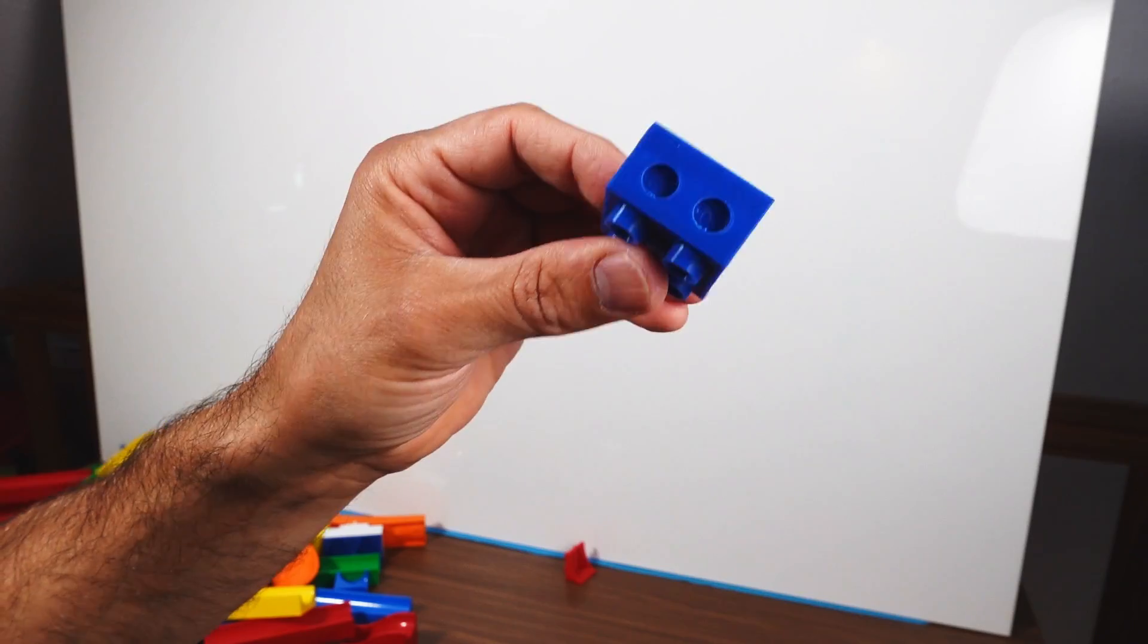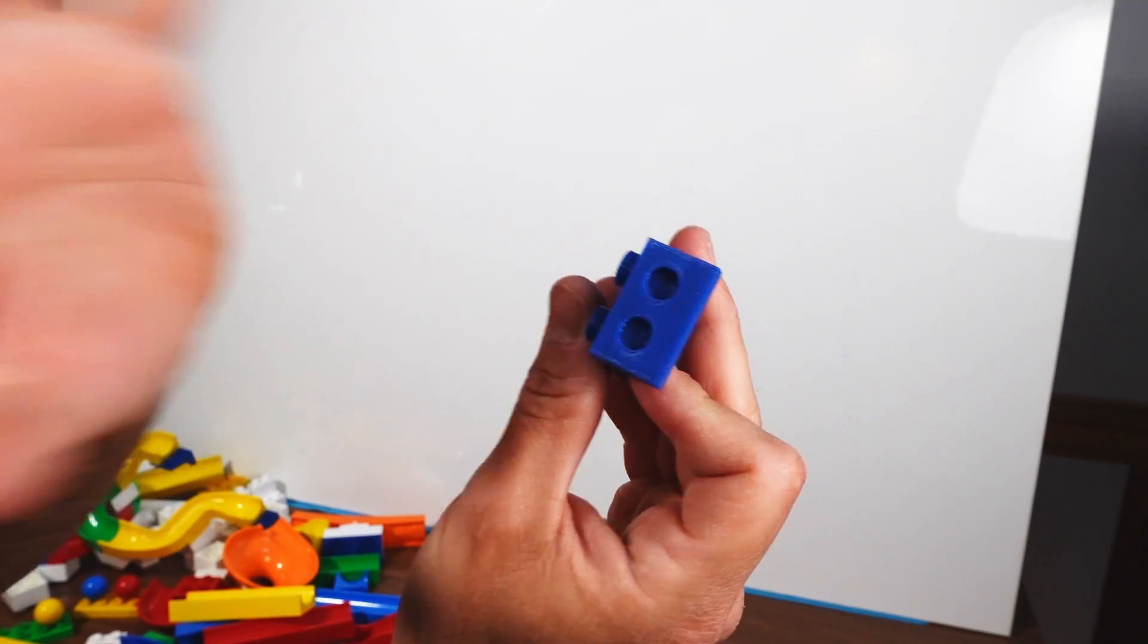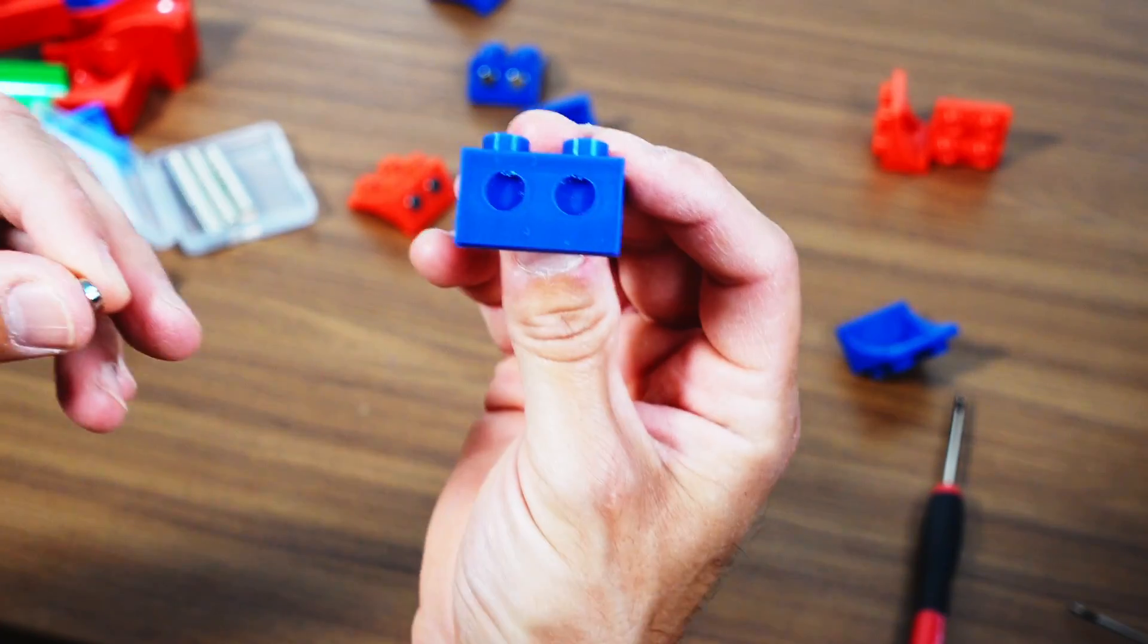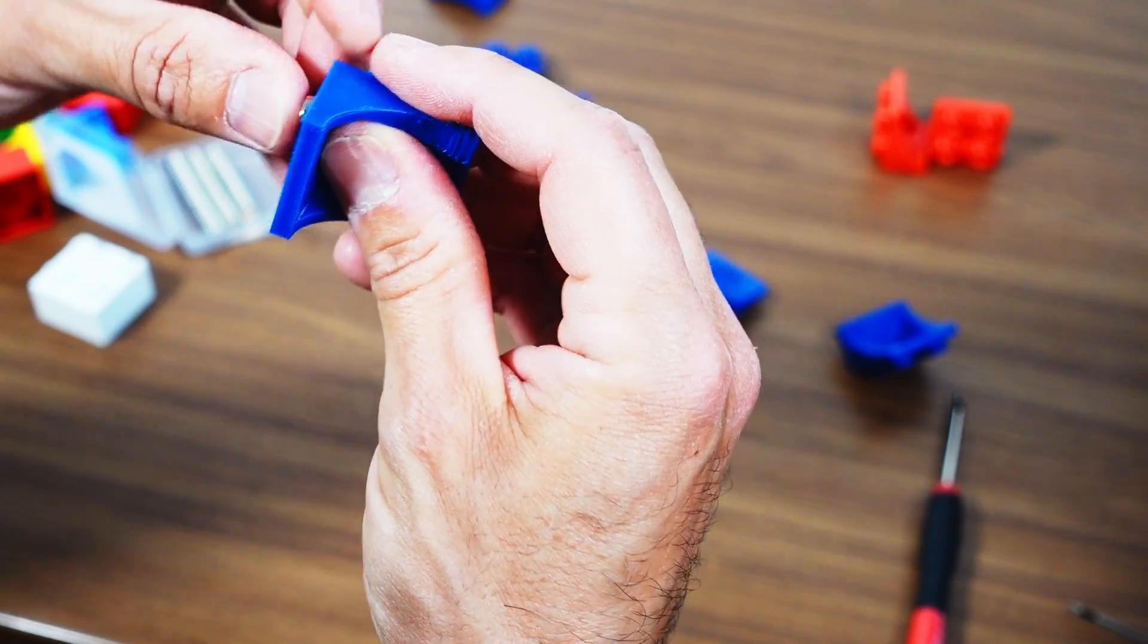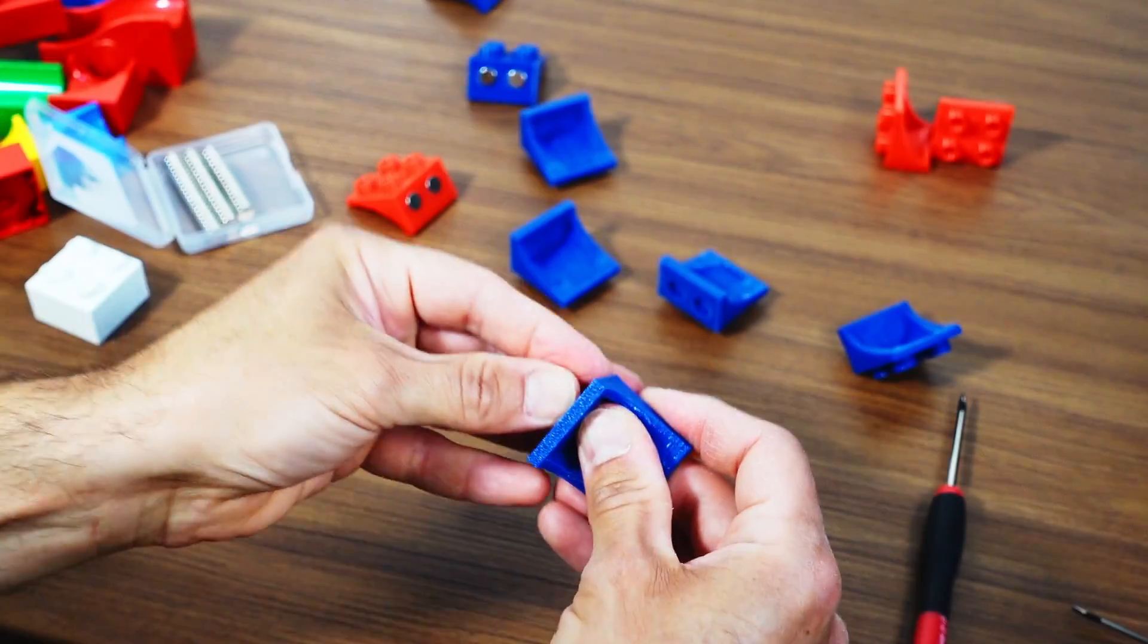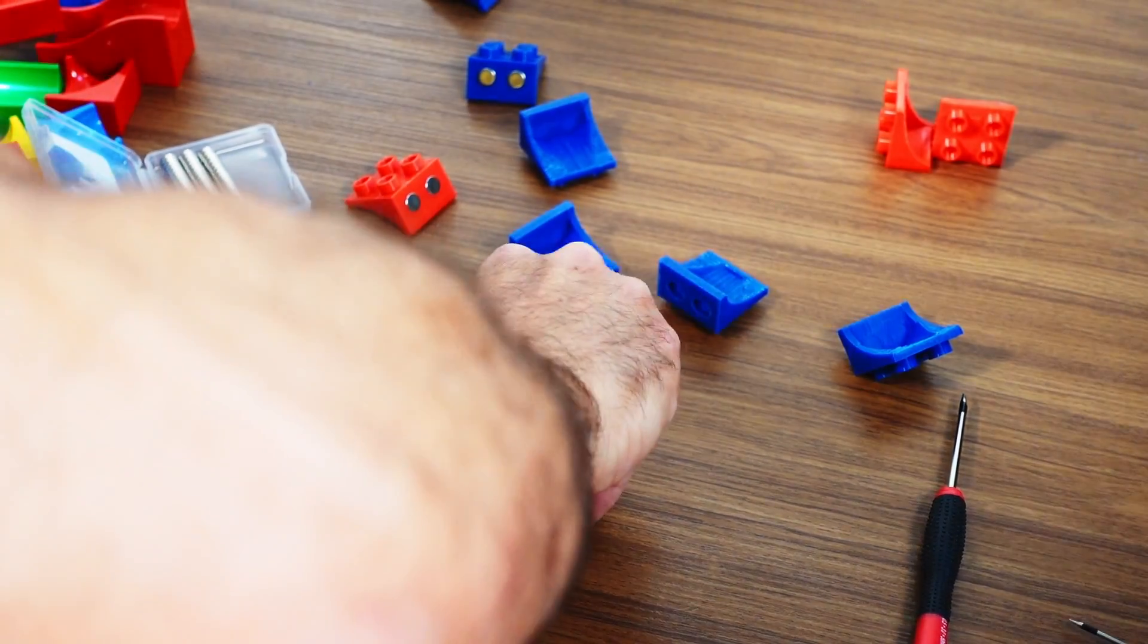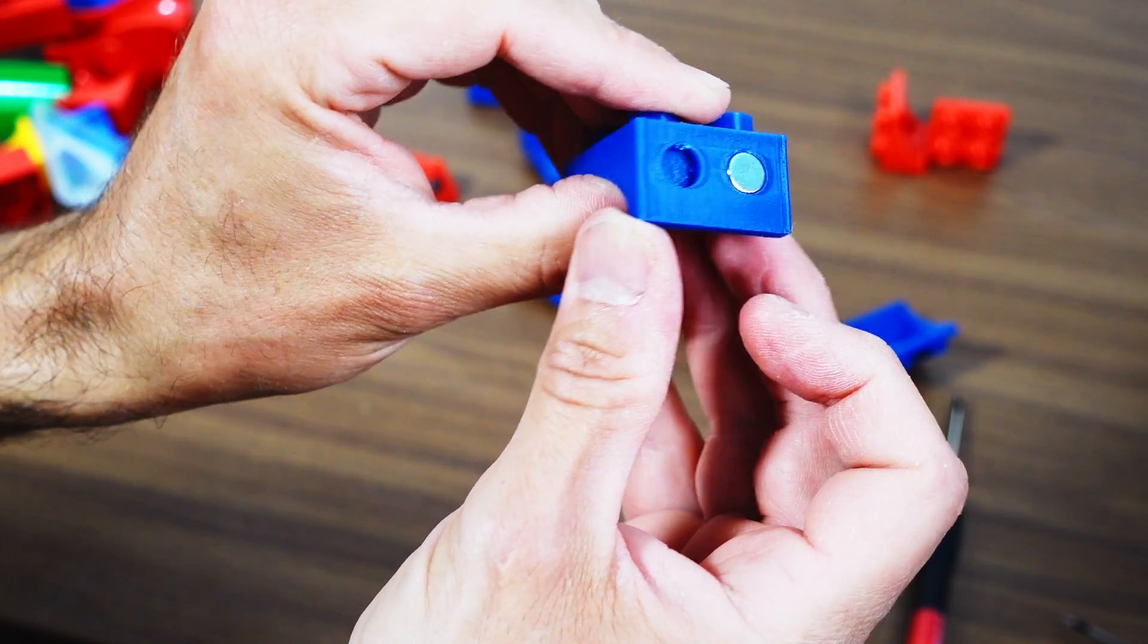But other than that I designed these cavities here so the magnets can directly go in there without any need for glue or something like that. The magnets fit those cavities here really tightly. So I usually don't manage to do it with bare hands. I normally just put it on the table and apply a little bit of pressure. And there you go, the magnet is in there, you don't need any glue or anything.